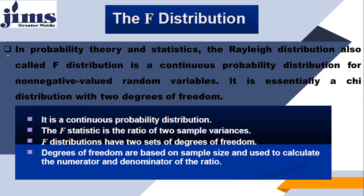It is essentially a chi distribution with two degrees of freedom. This particular Rayleigh or F distribution has two different random variables — Rayleigh distribution is the resultant of two different random variables. This particular Rayleigh distribution is defined for non-negative values, meaning whatever values this random variable has are greater than zero. This particular distribution is the resultant of two different probability distributions, and these two different probability distributions actually follow Gaussian distribution.